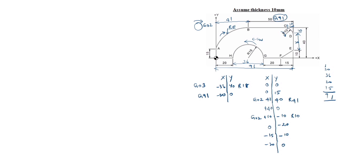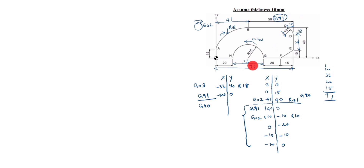Up to here is G91 code. Up to here we used G90. Starts from here G91, up to here, then end G90. So the tool goes outside — you have to take it from here. For X-axis take plus 100, Y-axis take plus 50. The tool comes to position 100, 50.